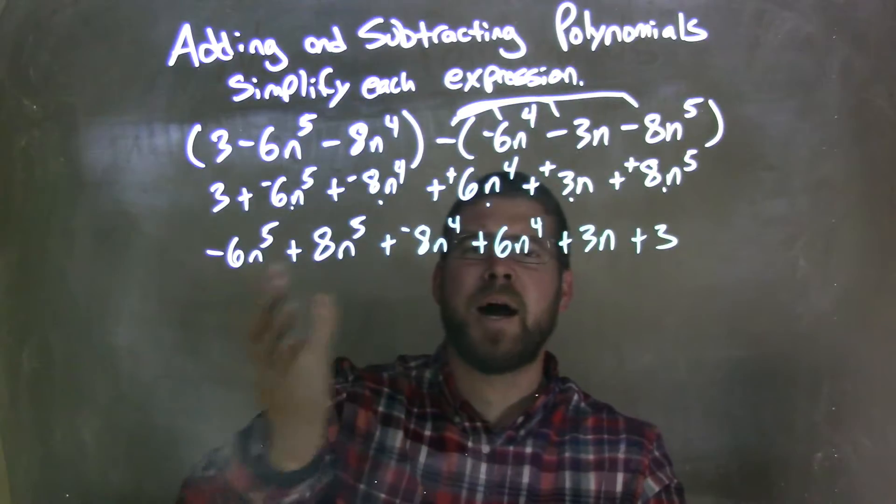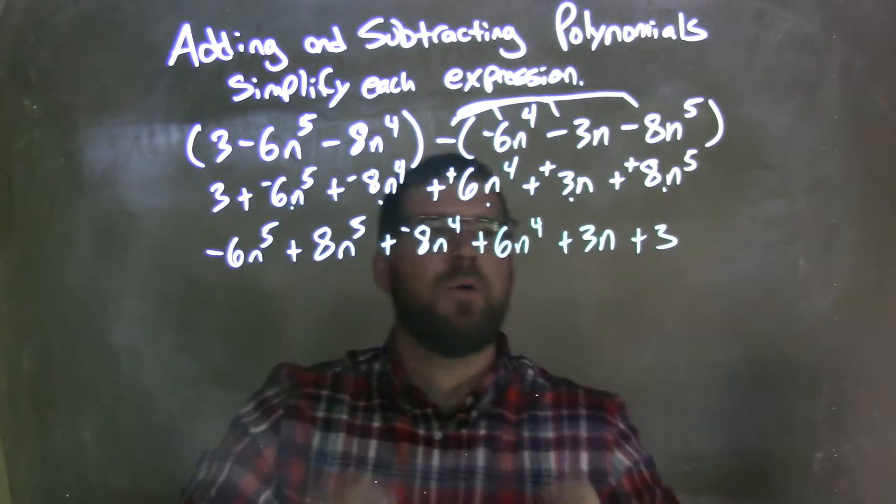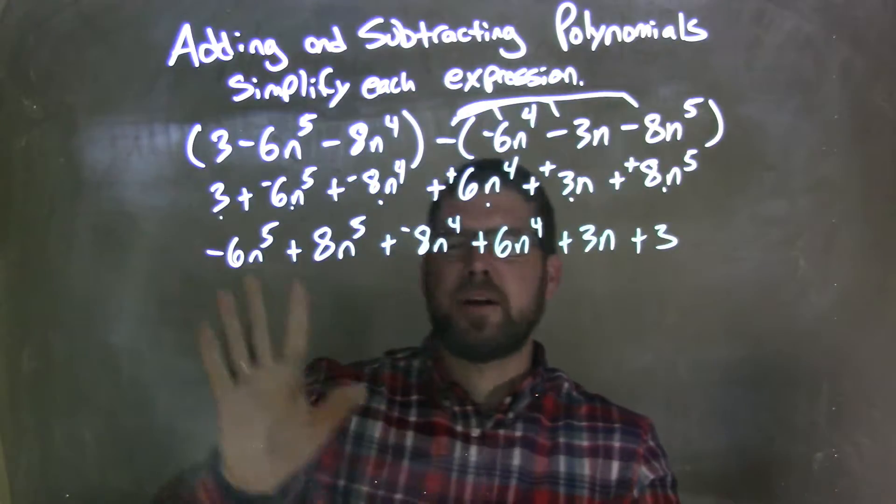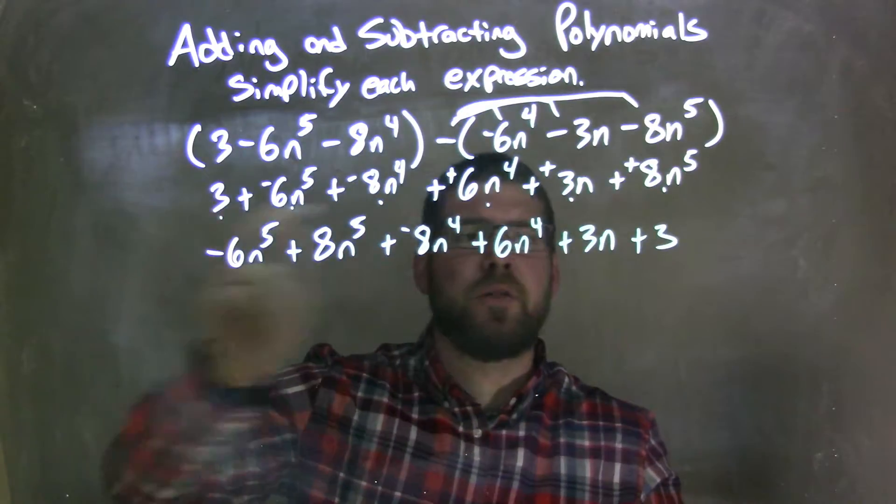So now I want to combine my like terms. Plus 3, I marked that one. Let's just do my shoes. Before I do that, let's double check everything. 3 is right there. Negative 6n to the 5th right here. Negative 8n to the 4th right there.